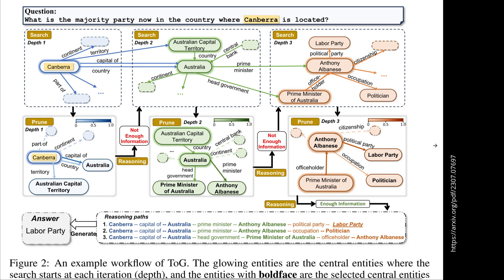Shown in another visualization: the same question with different search depths. We have Canberra with relations like continent, territory, capital of, part of — that's our subgraph. Then Australia as the second object with its subgraph, then Anthony with whatever he's connected to in the knowledge graph. Having this powerful subgraph, we start to prune it, looking at the most important information needed to answer the user query. If we don't have enough information at one step, we continue — from Canberra to Australia, prune, then go on with Anthony.